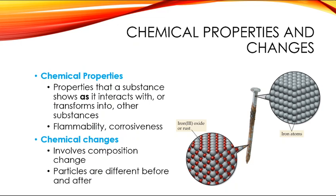On the other end of the spectrum, we have chemical properties and changes. A chemical property is only shown when there's some type of interaction between your substance and something else — most of the time we call these chemical reactions. If you catch a piece of wood on fire, the chemical composition is being changed. For example, an iron nail turning into iron oxide — rust — is a chemical change. Iron atoms in a nice aligned structure interact with excess oxygen and form a new compound.